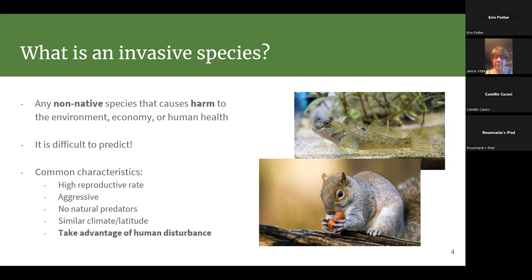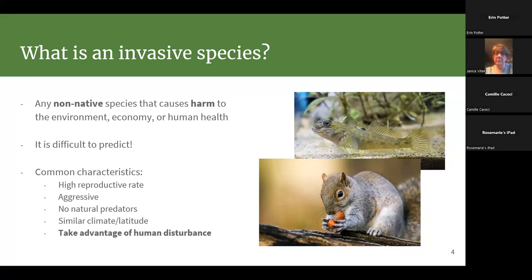Eastern gray squirrels, which are native to us, are a great example. In the UK and Ireland where they're very invasive, they absolutely terrorize their native squirrel species. Another key trait: no natural predators. When invasive species come from a similar environment with similar seasonal patterns and nothing is eating them, they're able to multiply rapidly and act aggressively because nothing is controlling their numbers.